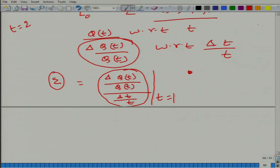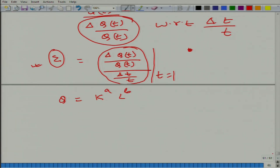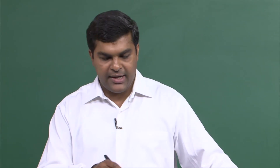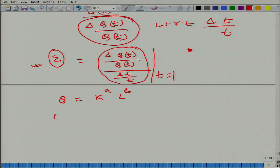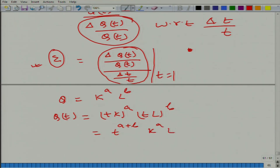Let us take an example to evaluate elasticity of scale. Consider the Cobb-Douglas function: q = k^a · l^b. In this case local and global do not differ because of Cobb-Douglas properties, but we are evaluating elasticity of scale. First, we make it a function of t: q(t) = (tk)^a · (tl)^b = t^(a+b) · k^a · l^b, so q(t) is proportional to t^(a+b).